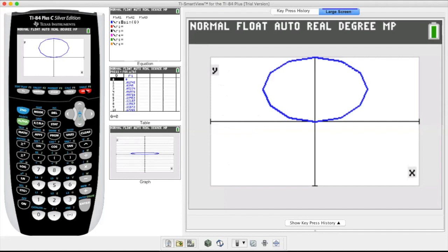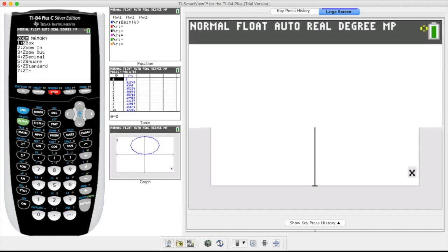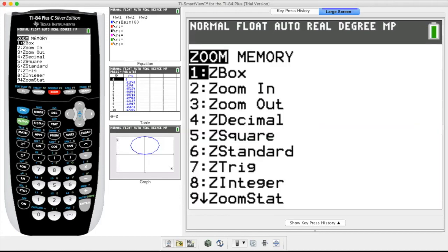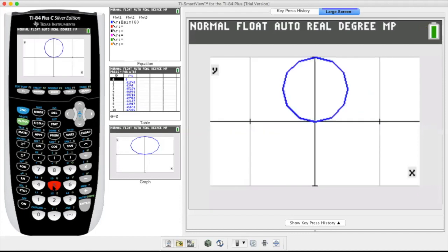All right. Hey, that's kind of like what I sketched by hand, but why does it look so oval? Well, you need to hit zoom square, zoom square, which is five.